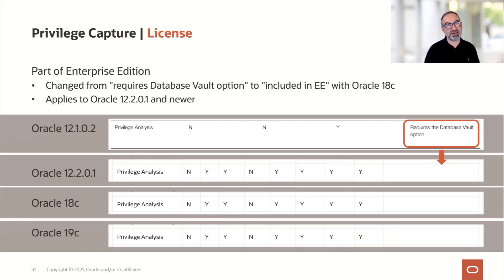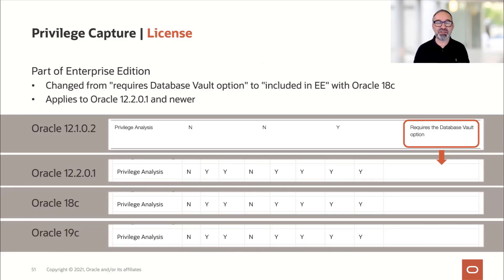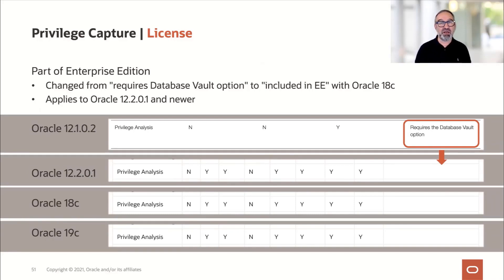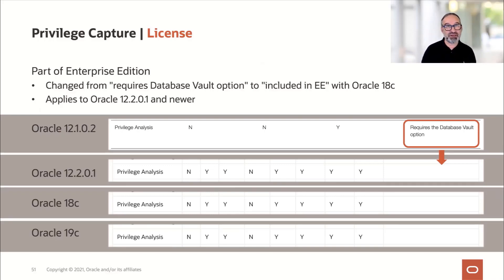The very important thing — and this is why we decided to include this in our slides — is that somebody made a not-so-wise decision in the early days and said this requires the Data Vault option. Now, the Data Vault option is not an option everybody has, so not many people used it. With 18c, this became a standard Enterprise Edition option, and it applied backwards to 12.201 as well. In 12.1 it still required the Data Vault option, but from 12.201 on, it's not required anymore. So if you have Enterprise Edition, feel free to use it.